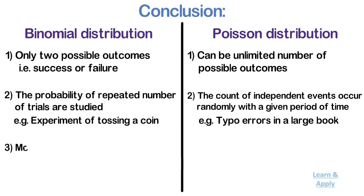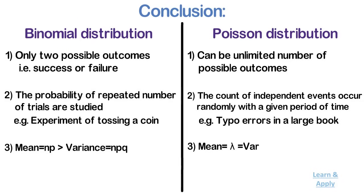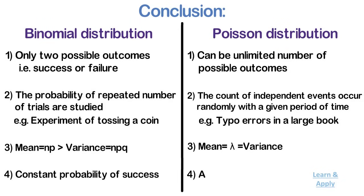3. In binomial distribution, mean = np which is greater than variance = npq, whereas in Poisson distribution, mean equals variance, which equals lambda. 4. Binomial distribution has a constant probability of success, whereas Poisson has an infinitesimal chance of success.